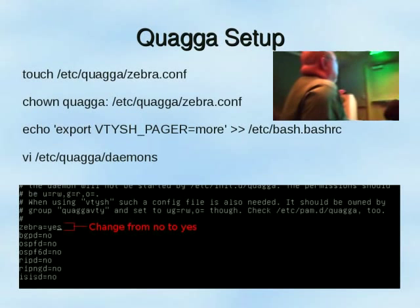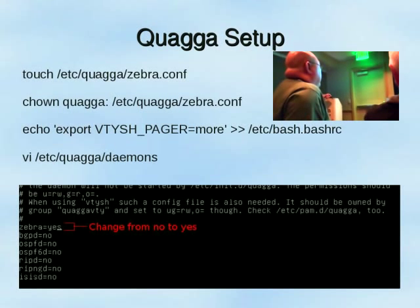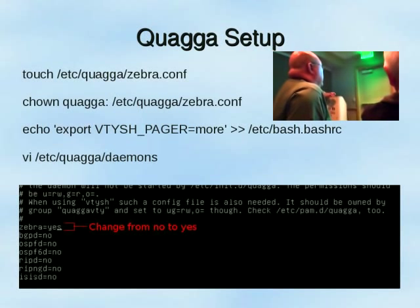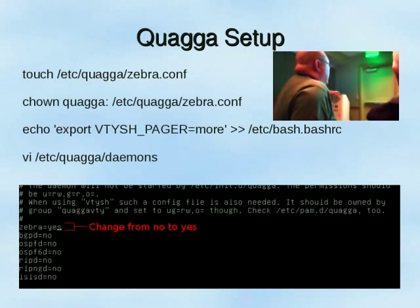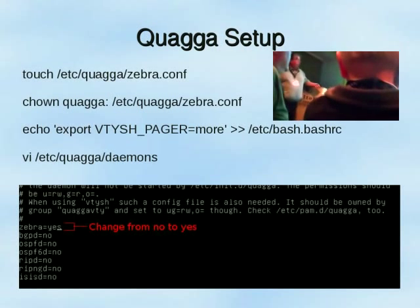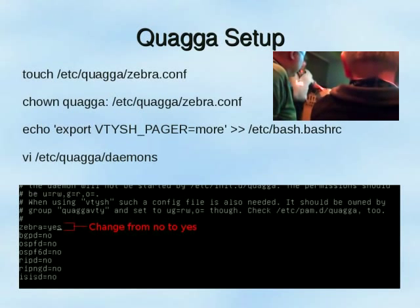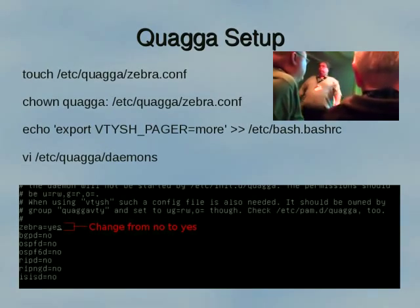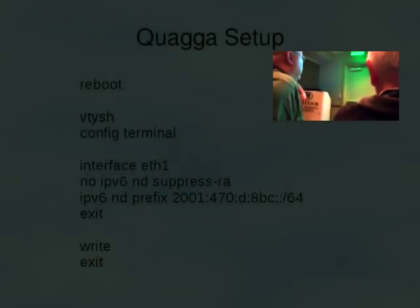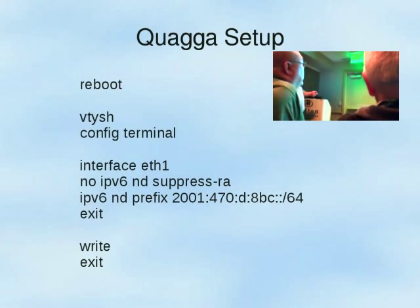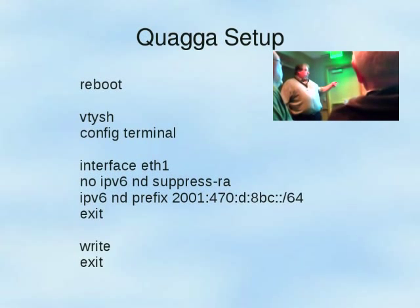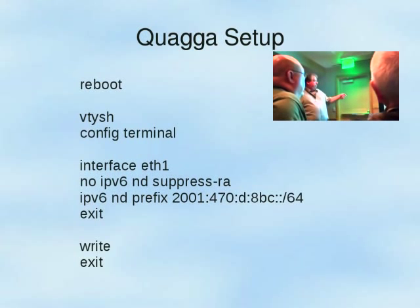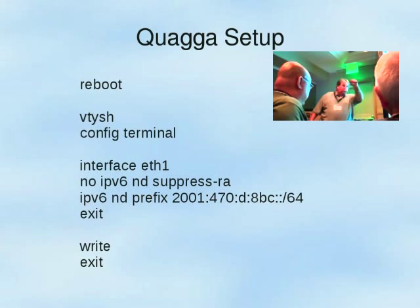We're going to edit /etc/quagga/daemons — this is specific to Debian. We change 'zebra=no' to 'zebra=yes'. If you want to play with BGP, OSPF for both IPv4 and IPv6, this is the tool. Note: Quagga used to be called Zebra. Once we've done all that, we reboot the machine, log back in, and type the command 'vtysh'. We then type 'config terminal'.